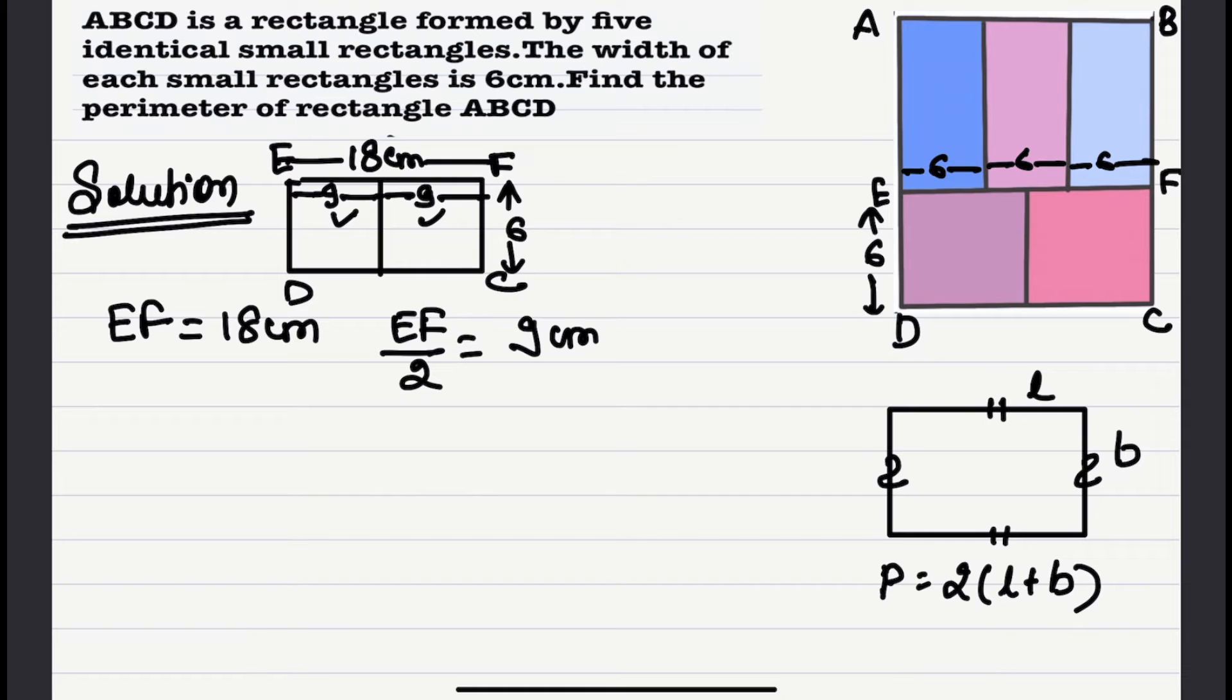So this will be nine centimeters. So the length of the rectangle is equal to nine centimeters. This is nine and this side is also nine centimeters. This will be 18 centimeters. Since the opposite sides of the rectangles are equal as well as parallel, this will be 18 centimeters.